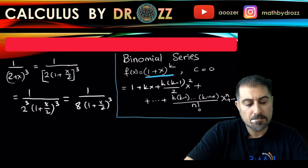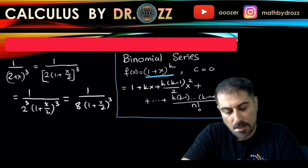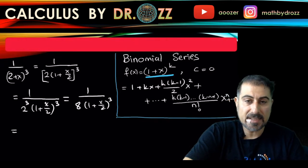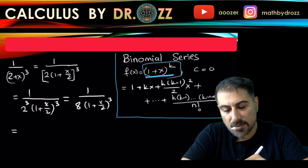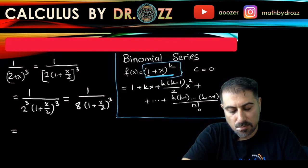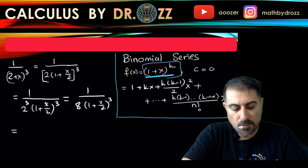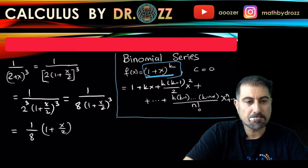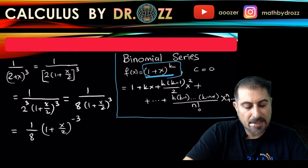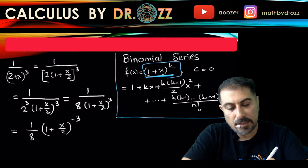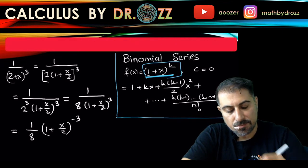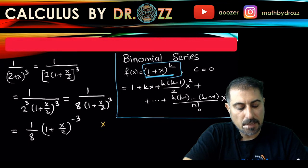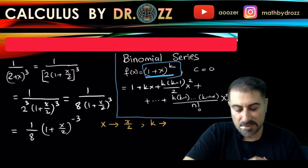And then remember in this form here we have (1 + x) to the power of k, so I have to write this as a reciprocal: 1/8 times (1 + x/2) to the power of negative 3. Think about the case where x equals x/2 and k equals negative 3. So replace x by x/2 and k by negative 3 in the form of the binomial series.